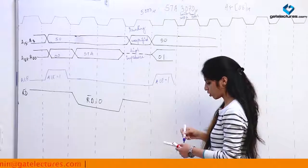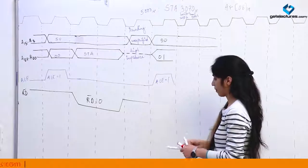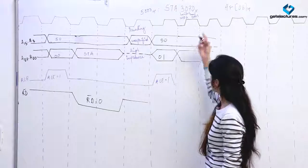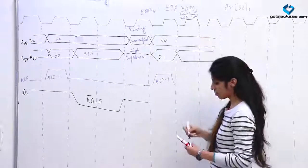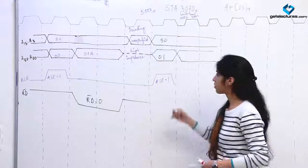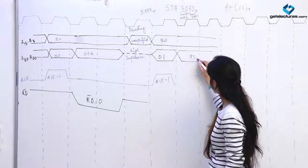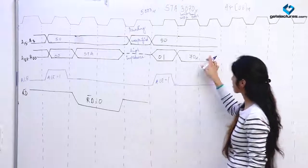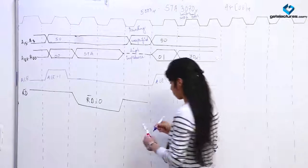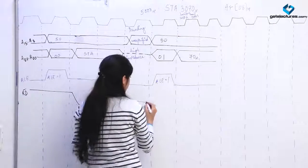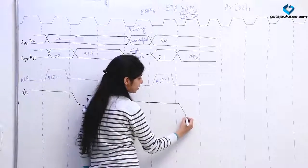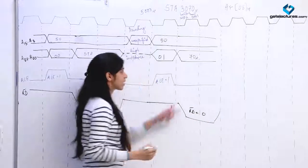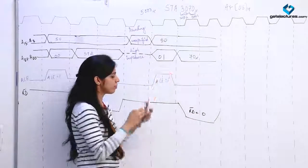We want to read this, so 70 is going to be read from the memory. ALE is low so that this acts as data bus, and we are also going to make read-bar 0 for two clock pulses. With read-bar 0, we have now got 70 in the microprocessor.